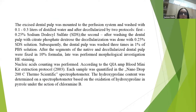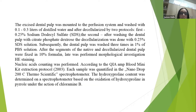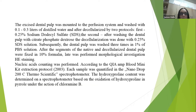The excised dental pulp was mounted to the perfusion system and washed with 0.1–0.3 liters of distilled water. After this, two decellularization protocols were used. The first protocol used 1.25% sodium dodecyl sulfate (SDS). The second protocol involved washing the dental pulp with citrate phosphate dextrose, then decellularization with 0.25% SDS solution. Subsequently, the dental pulp was washed three times with 1% buffered saline solution. Segments of native and decellularized dental pulp were fixed in 10% formalin, then morphological investigation and hematoxylin-eosin staining were performed. Nucleic acid quantification was performed according to the Qiagen blood minikit extraction protocol, and each sample was quantified in a NanoDrop ThermoScientific spectrometer. The hydroxyproline content was determined spectrophotometrically based on the oxidation of hydroxyproline to pyrrole under the action of chloramine B.